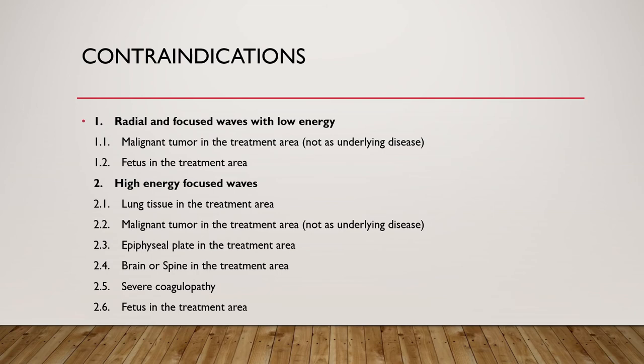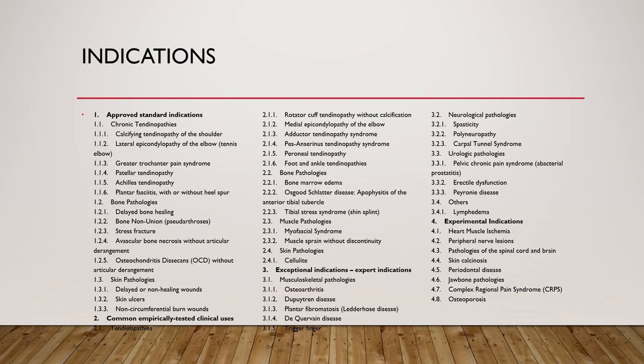Contraindications for radial and focused waves at low energy include malignant tumor in the treatment area and fetus in the treatment area — as discussed with the belly/tummy region. For high-energy focused waves the contraindications include lung tissues, malignant tumor, epiphyseal plate, brain or spine in the treatment area, severe coagulopathy, and fetus in the treatment area. These lists are not exhaustive — pause the video for a complete review.